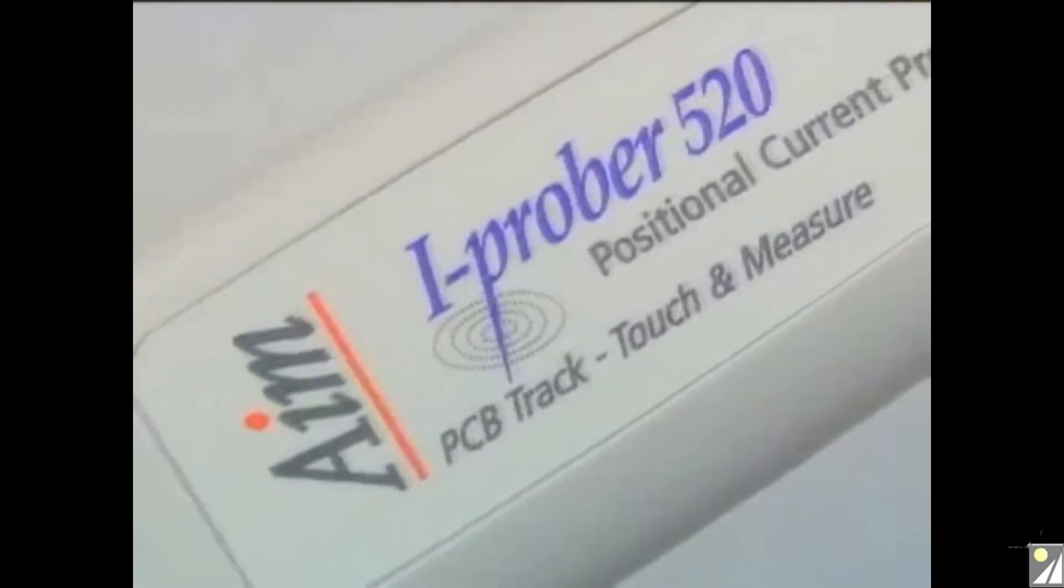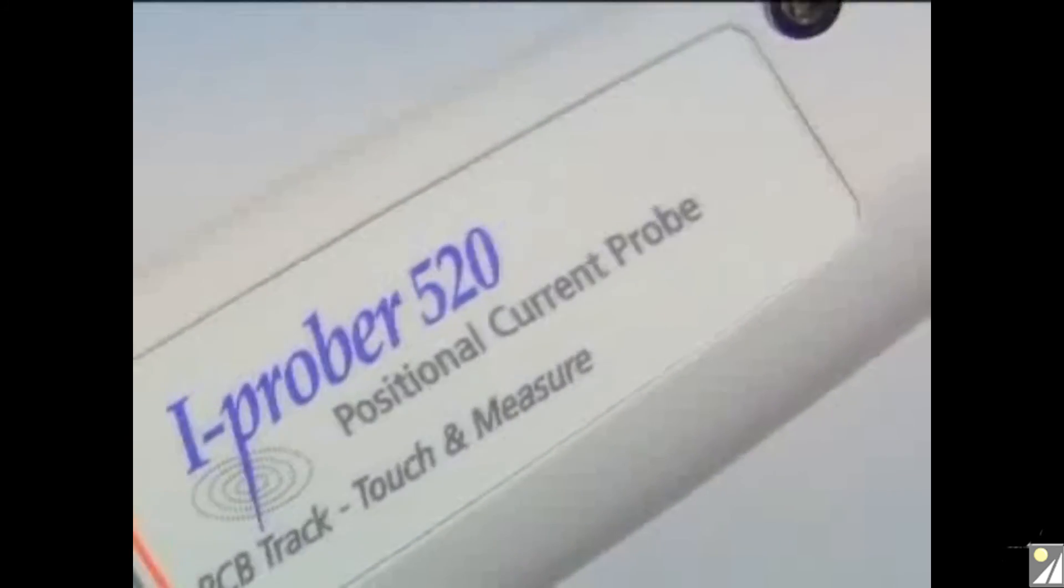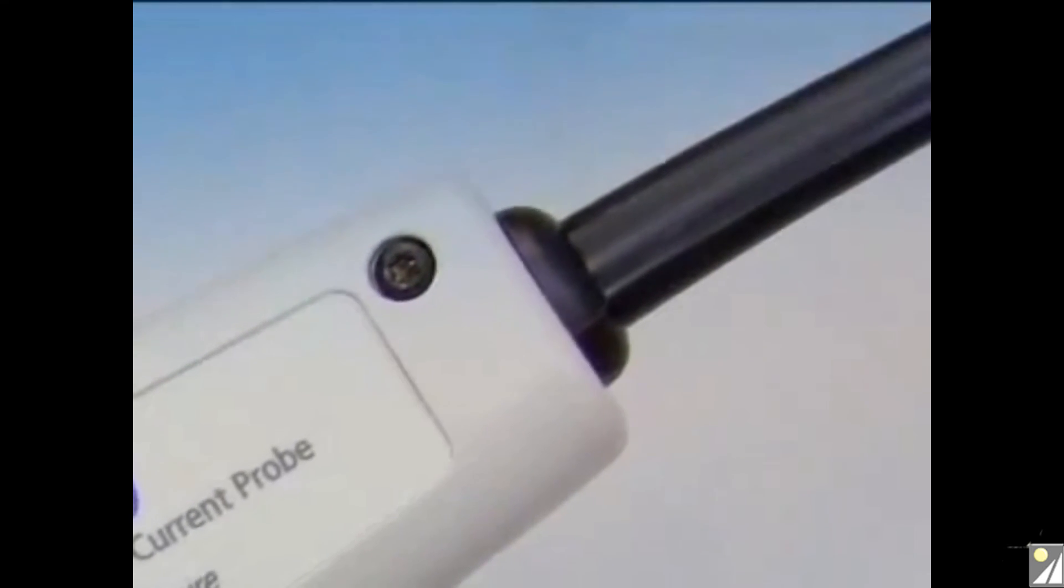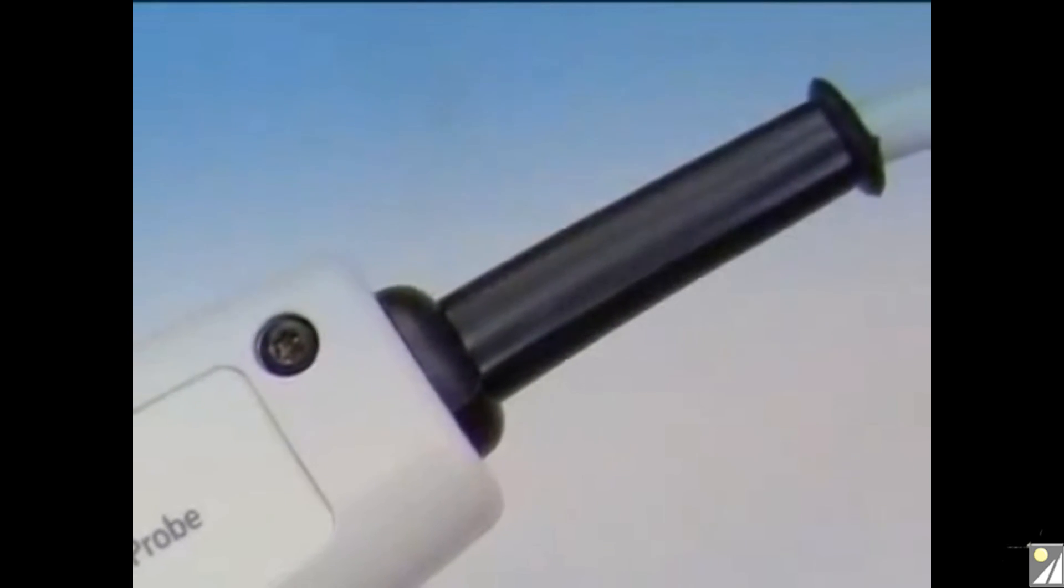The probe is light and compact and fits comfortably into the hand. The tip is made from high temperature material and the probe is double insulated for safety on high voltage tracks. The grip guard keeps your hand away from any high voltage areas on your target PCB and the whole probe is 300 volt CAT2 rated.